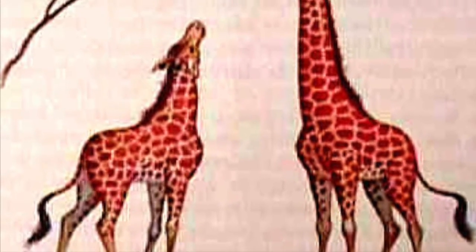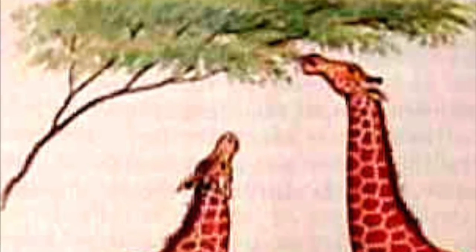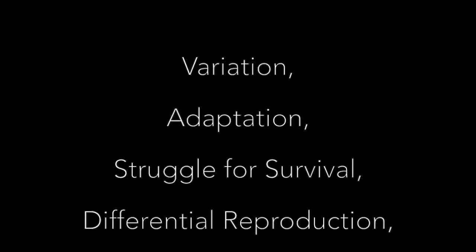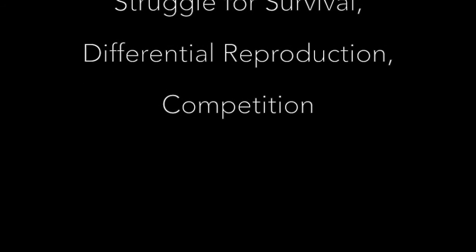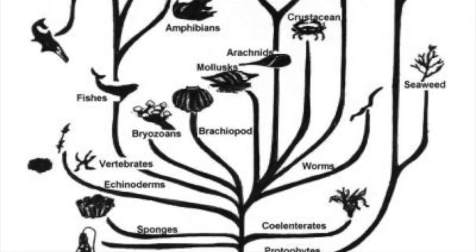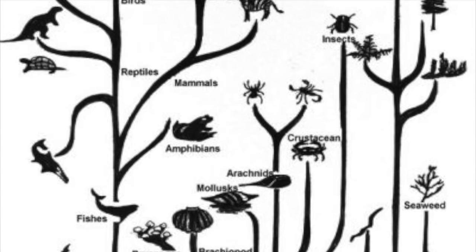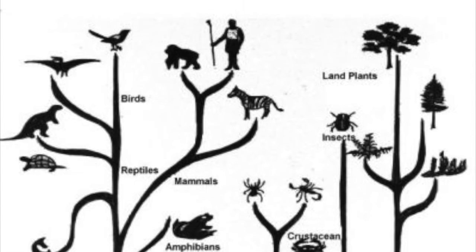Another theory is evolution through natural selection. Given the following variables — variation, adaptations, struggle for survival, differential reproduction, and competition — we can predict that a population of organisms will change over time, leading to evolution of a species.